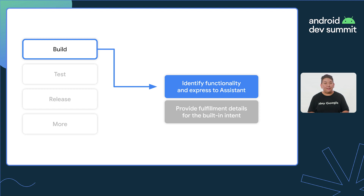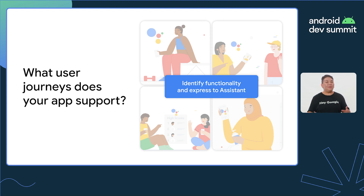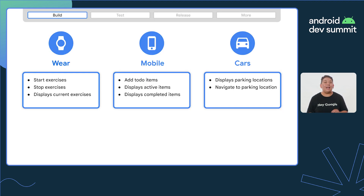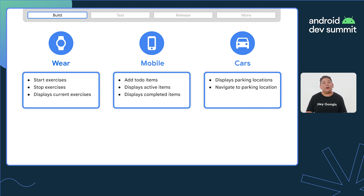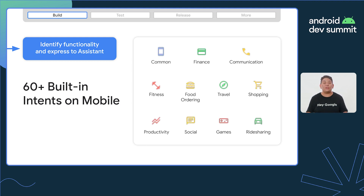The first step in building for voice is identifying your app's functionality and expressing that to Assistant. Think about what your app does and what type of functionality it supports. Do you have a game app with a leaderboard? Does your app track workouts? How about searching and viewing news updates? A key concept in machine learning and NLU is intent matching — identifying speech patterns for a particular functionality or intention of the user. Assistant has identified and supports over 60 different intents, which we call built-in intents, or BIIs for short.